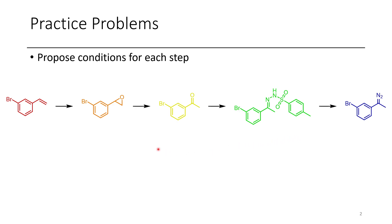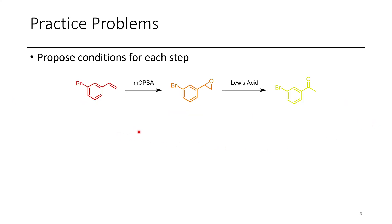In this first problem we have a styrene, and through a multi-step synthesis we want to make it into this diazo compound. Initially what we could do is an epoxidation of the styrene using MCPBA, giving us the epoxide. Once this epoxide has been synthesized, it would be possible to use a Lewis acid to convert this epoxide into this ketone.